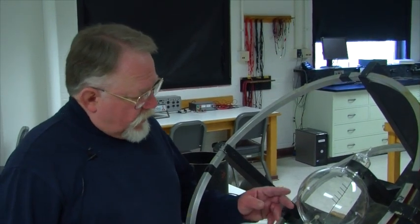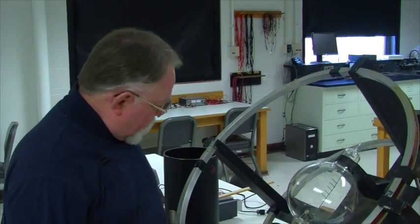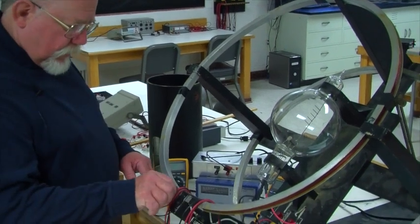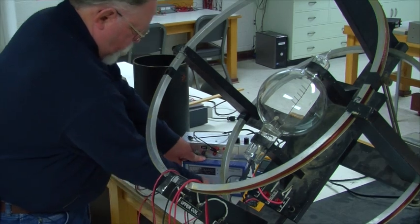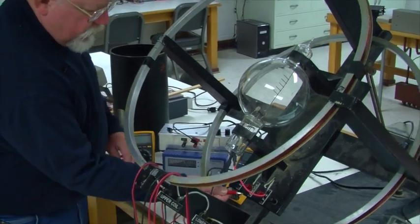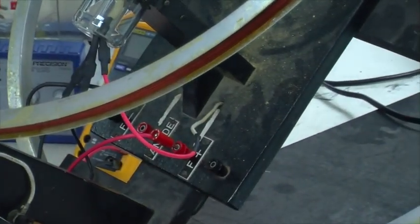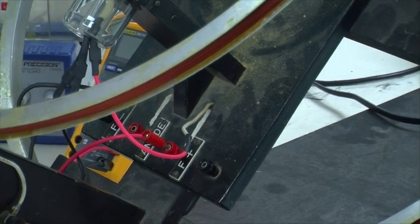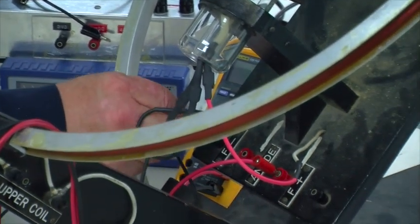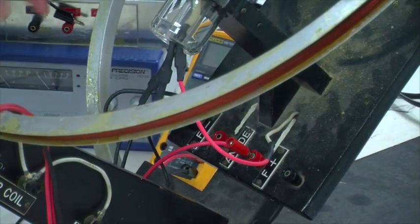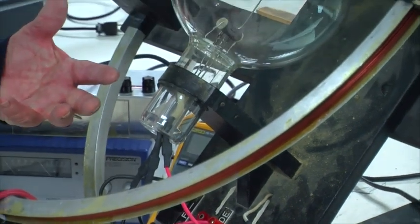We have to make the cathode hot, and we do that by connecting this power supply to the two ends of that filament. We go from the positive side of this power supply to the input marked F+, and from the negative side to the input marked F-. This lets us pass a current through that cathode and get it hot enough to boil off electrons.